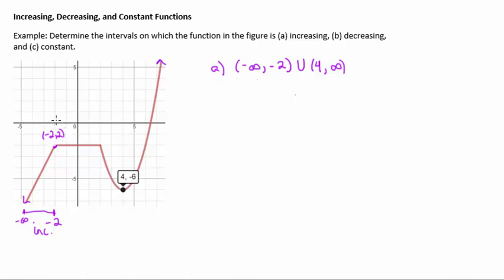For part b we want to look at where our function is decreasing. And so from left to right where is our graph going down? Well that would be from this point to this point. So from positive two to positive four because we just care about for what x values are our y's going down. So b is two comma four.